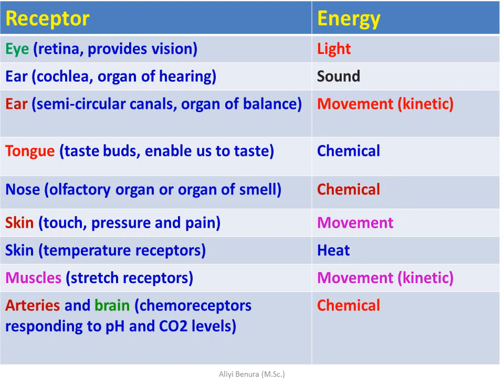Some of the most important sensory receptors include: receptors of the eye, that is the retina, which provides vision; ears for sound; also movement or kinetic receptors; the nose for chemicals and smells; the skin for touch, pain, movement, and temperature; muscles and arteries for movement and kinetics; and chemoreceptors in the blood and brain for chemicals.